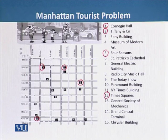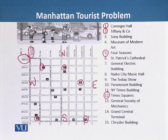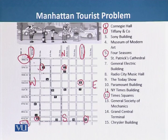Assuming north, south, east, and west orientations, the tourist starts from the corner of 59th Street and 8th Avenue and must reach the endpoint at 42nd Street and Lexington Avenue. Starting from this northwest corner, the tourist moves through different directions to reach the destination, passing many attractions along the way.